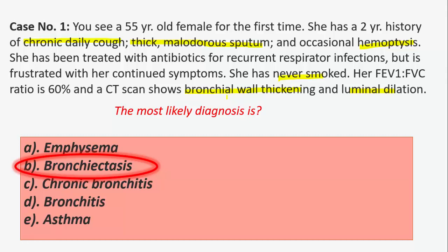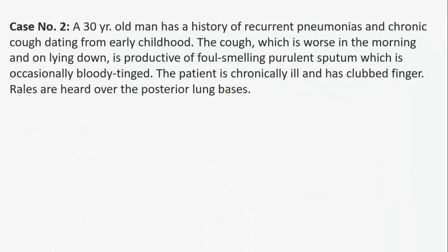Case number two: a 30-year-old man has a history of recurrent pneumonias and chronic cough dating from early childhood. The cough is worse in the morning and on lying down, and is productive of foul-smelling purulent sputum, occasionally blood-tinged. The patient is chronically ill, has clubbed fingers, and rales are heard over the posterior lung bases.